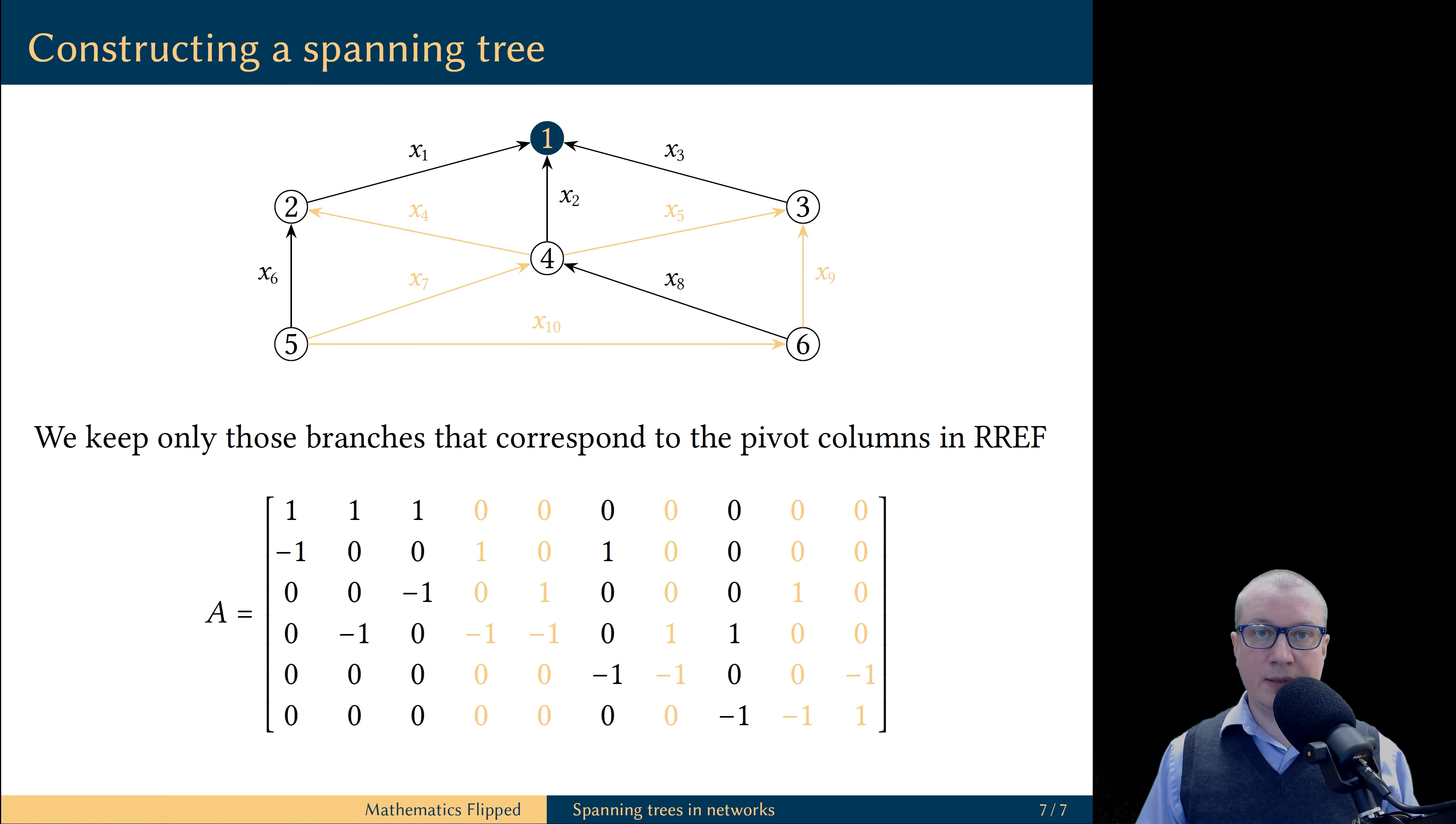If we simply delete them from the network, then notice, what we get is still a connected network, each oil field is connected to the refinery, we have no loops, and therefore this is a spanning tree that we were looking for.